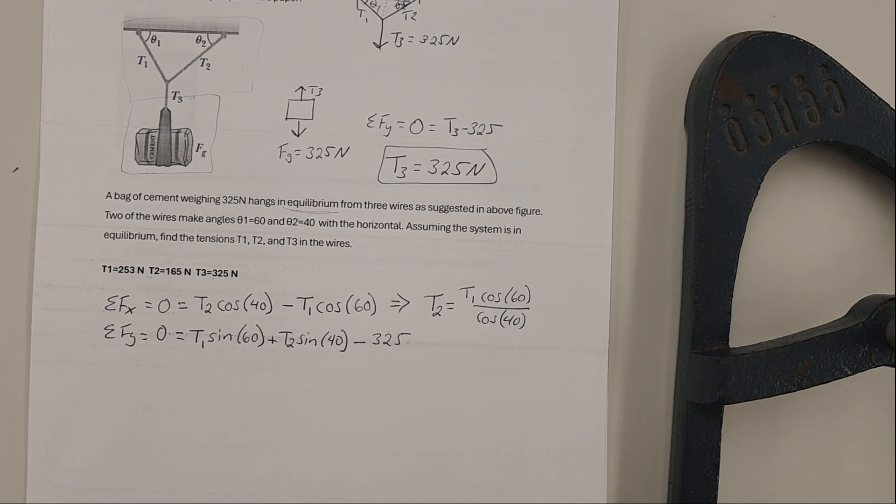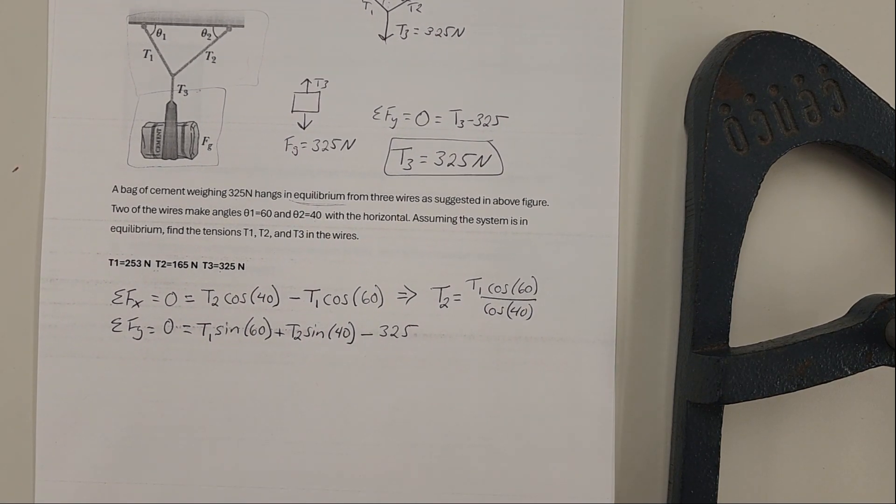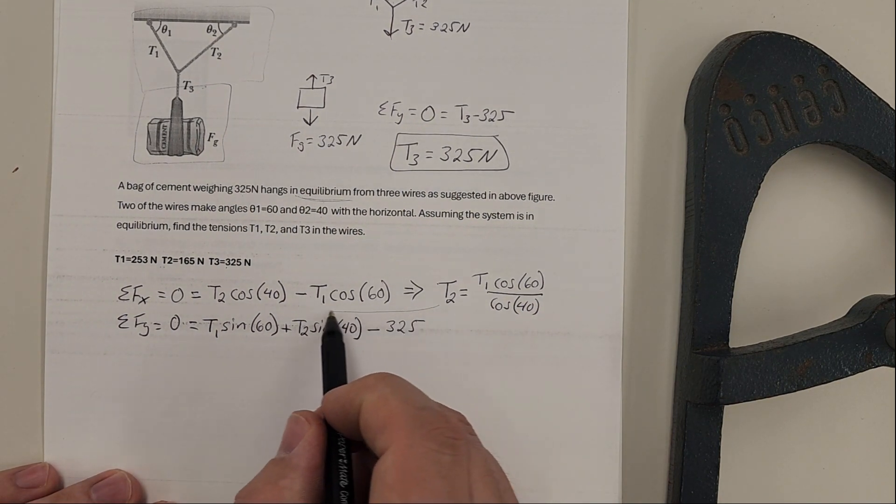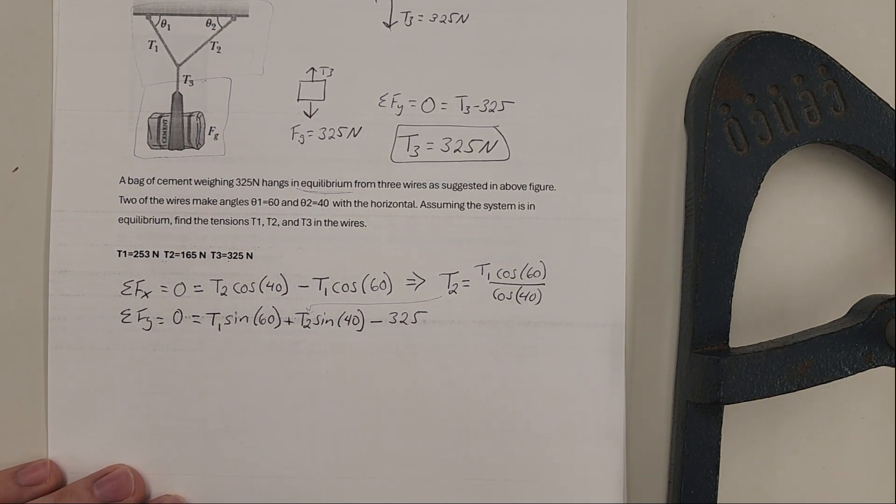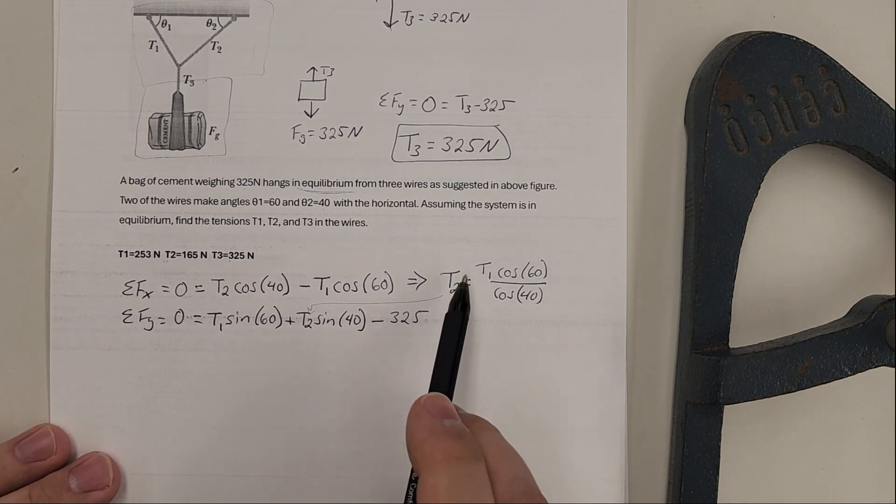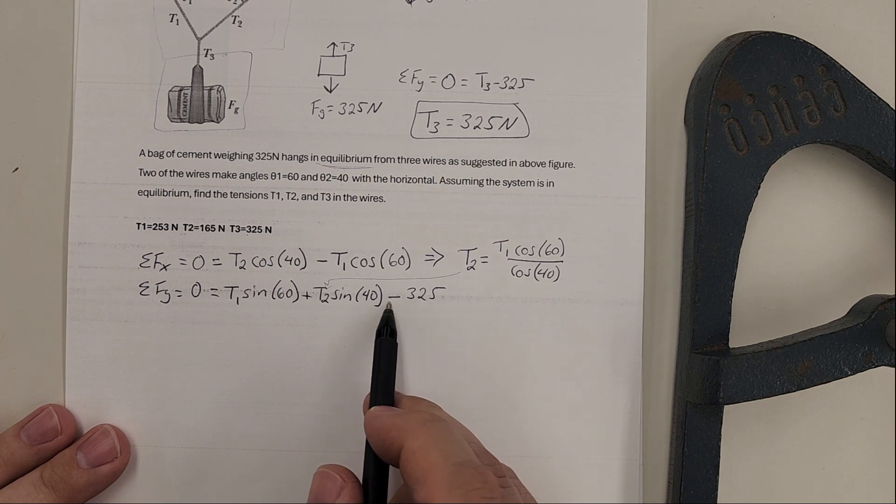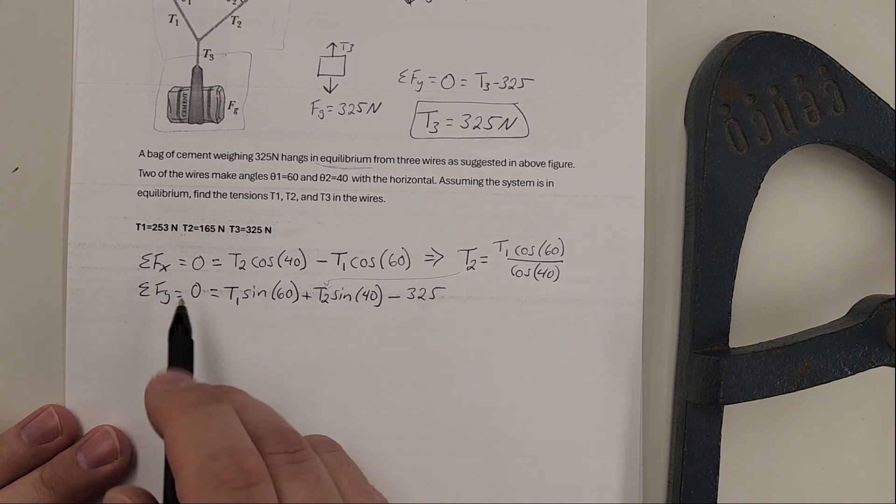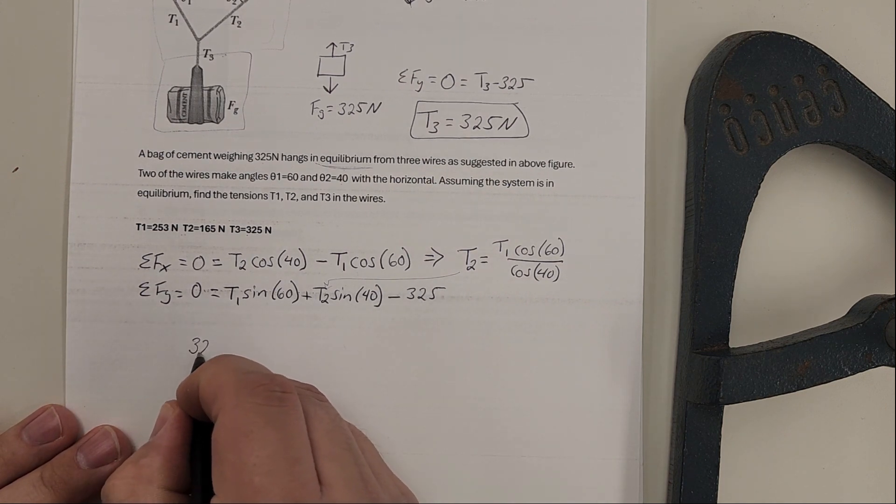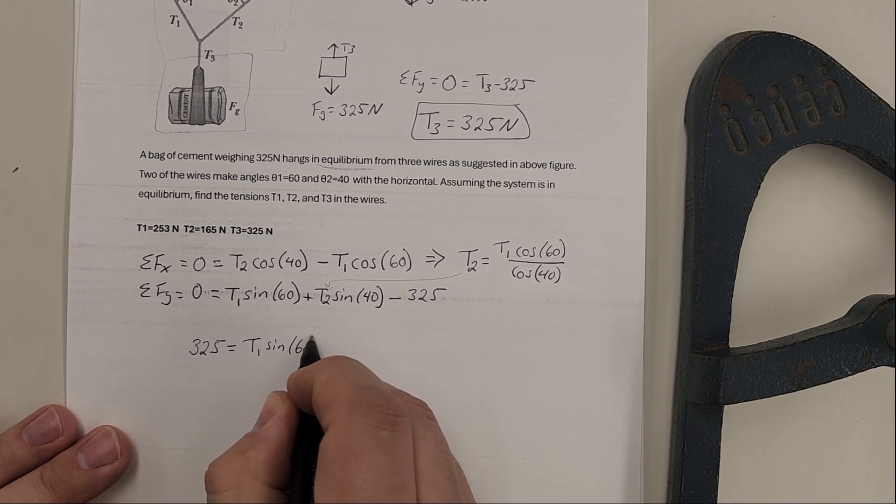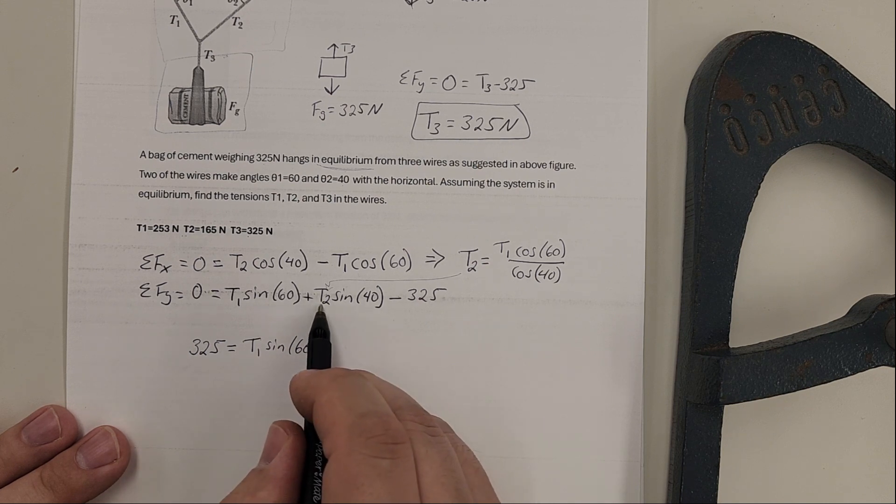This will tell us that T2 is equal to T1 cosine 60 over cosine 40. Now if we take that T2 and we plug it in down here for our T2, it'll eliminate T2 out of that equation and just give us T1. I'm going to add this 325 to the other side, so we'll start with 325 is equal to T1 sine of 60 plus where our T2 is.